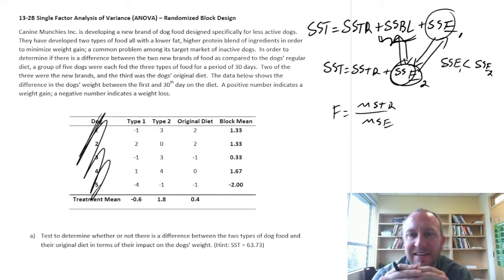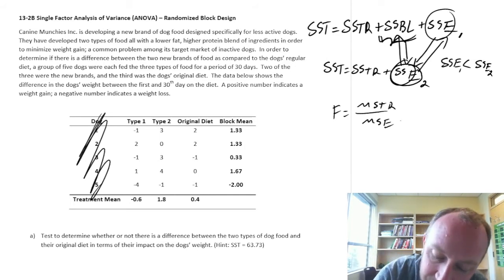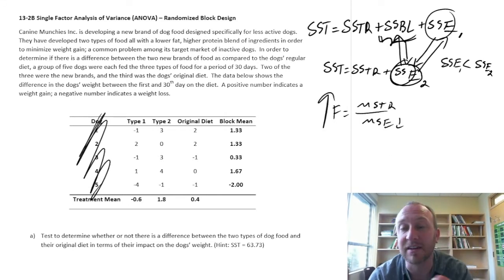So if SSE1 is smaller, if that sum of squares due to error is smaller because I've accounted for this other source of variation, well, then MSE is going to be smaller, which means that F-statistic is going to be larger.